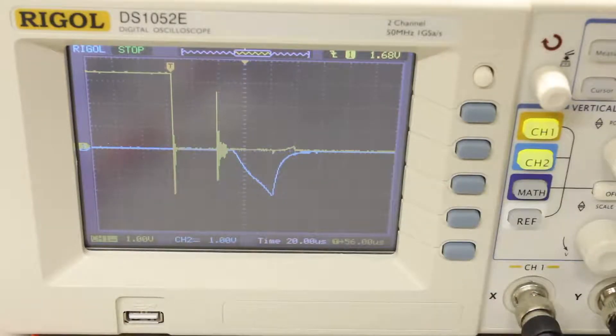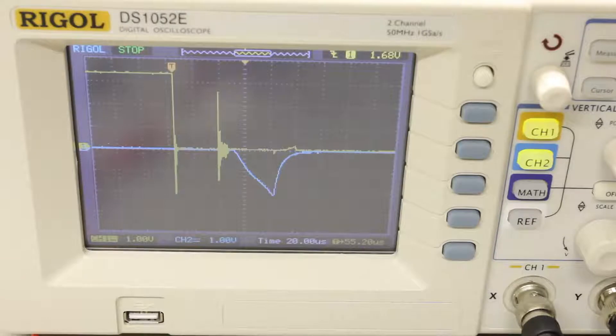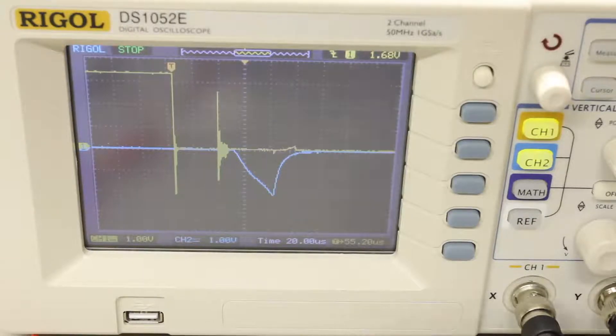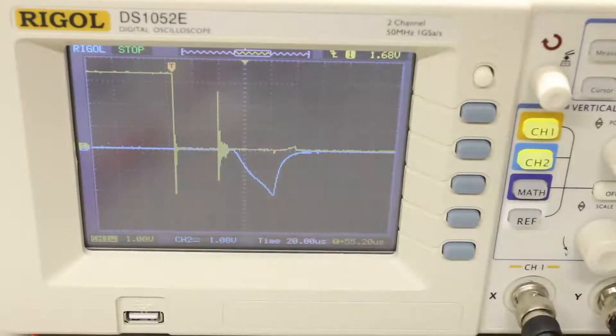So what we can see is that around 55 microseconds is where I would say the flash is actually emitting light.